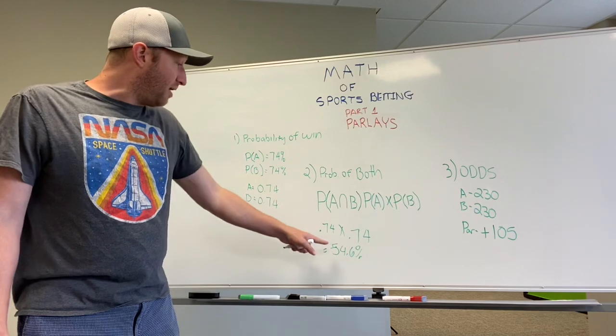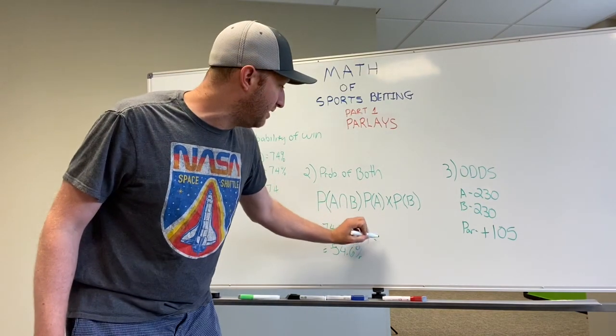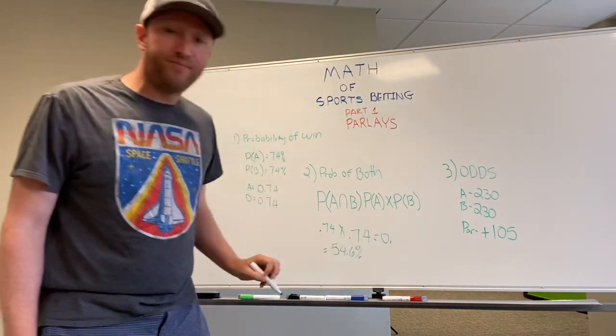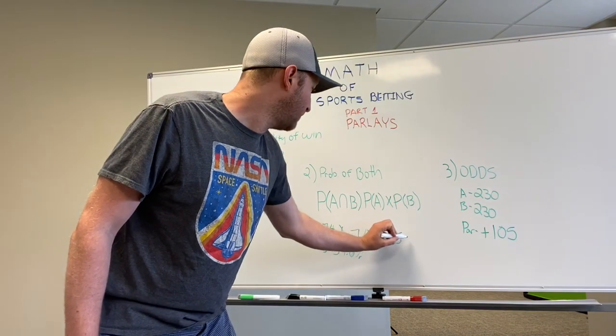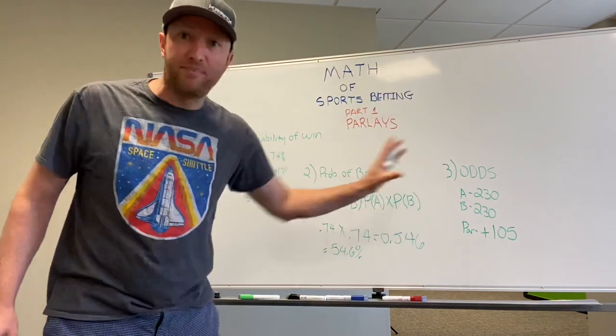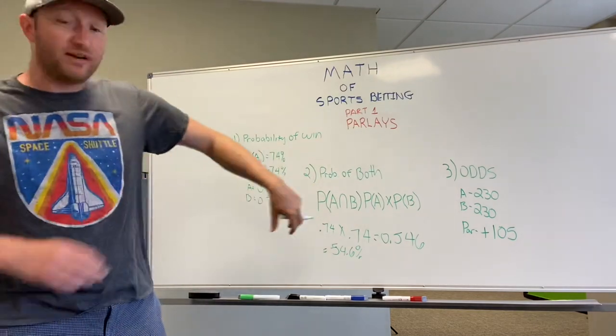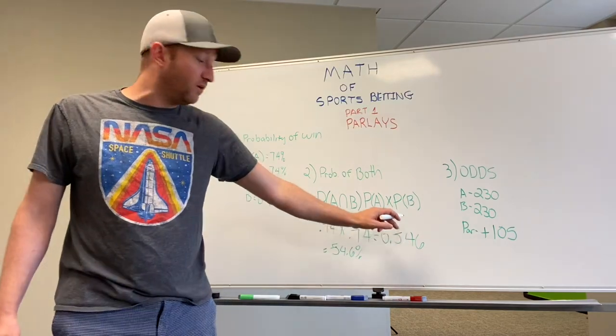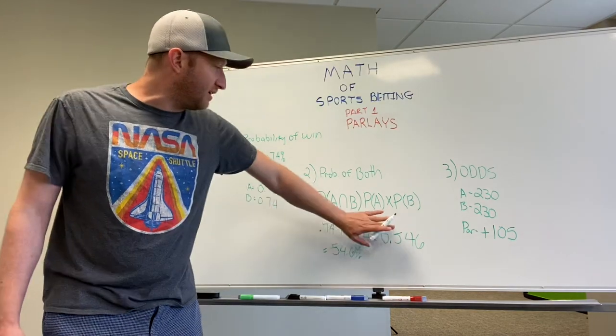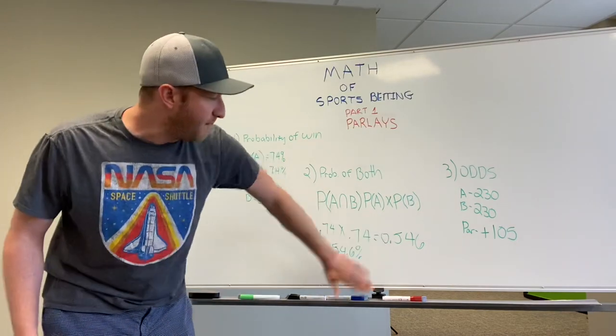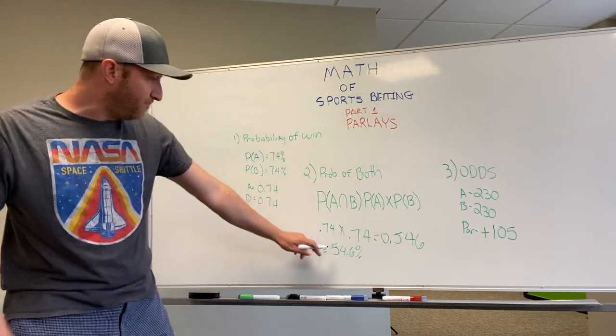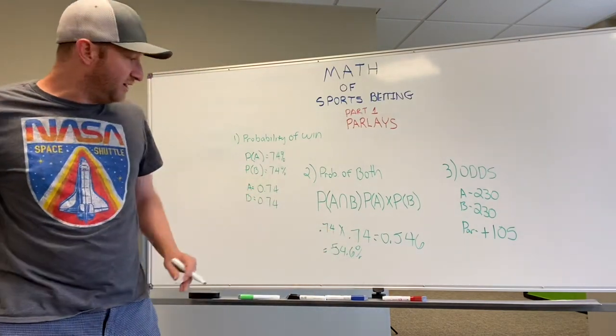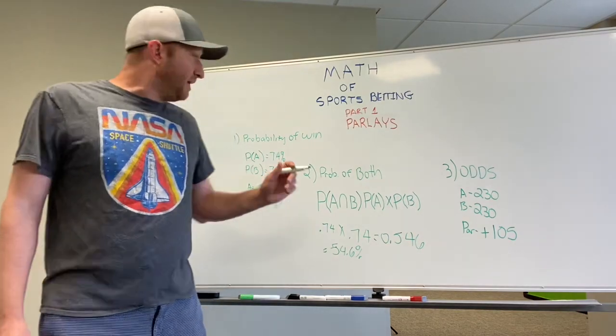When you have 74%, the easiest way to convert that over to mathematical probability is by changing this over to a fraction. So basically, 74% is 0.74 of one. One being a whole number or 100%. This is 0.74. That's 74%. That's how you would represent 74% with the decimal point in front of it. So now you need to figure out the probability of both of those hitting.